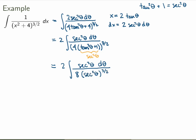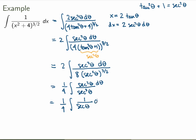Simplifying, 2 over 8 is 1/4, so I have (1/4) times the integral of secant squared θ over secant cubed θ dθ, which equals (1/4) times the integral of (1 over secant θ) dθ. This equals (1/4) sine θ plus a constant.